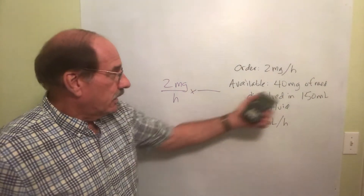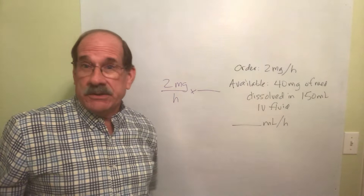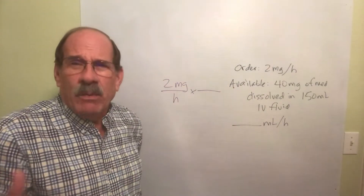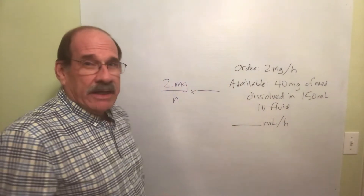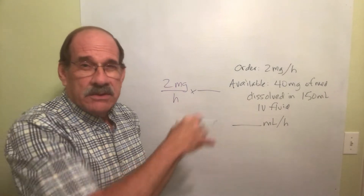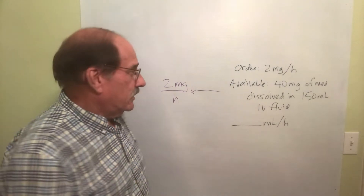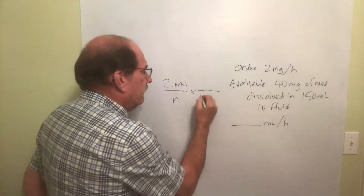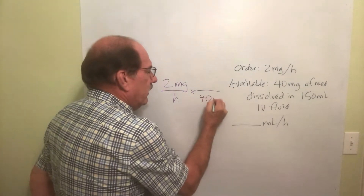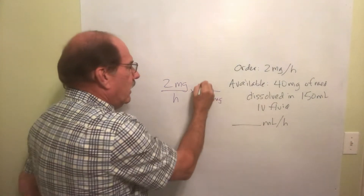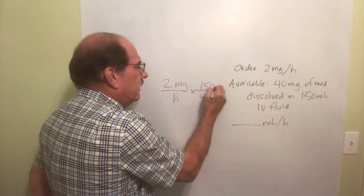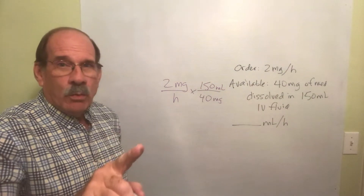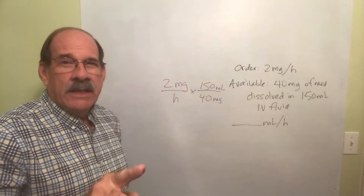Now multiply by our second fraction, which is how strong is my solution. Go from bottom to top — it's better. If I were to ask you how strong this stuff is: I've got 40 milligrams dissolved in 150 milliliters of IV fluid.